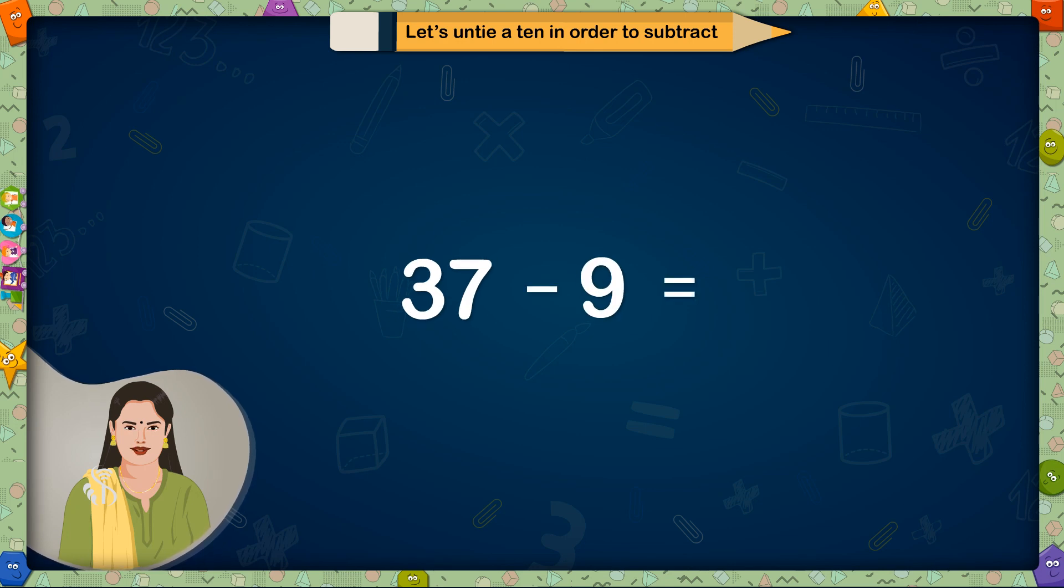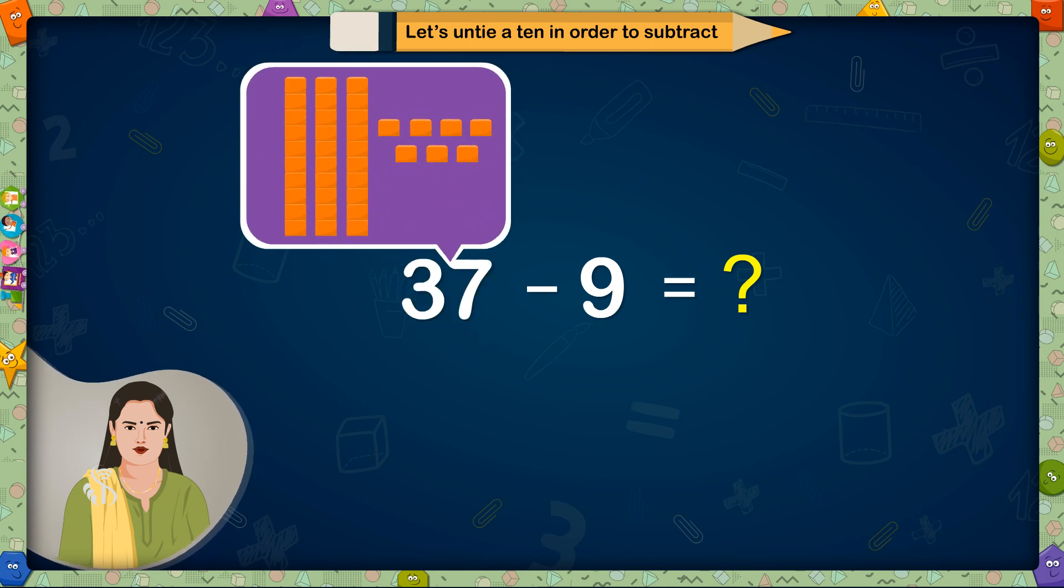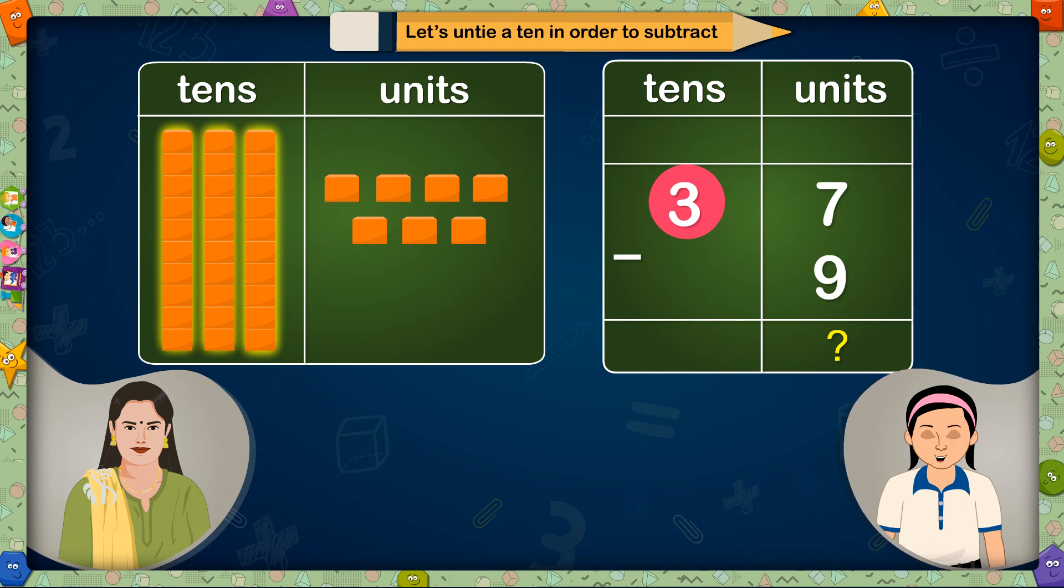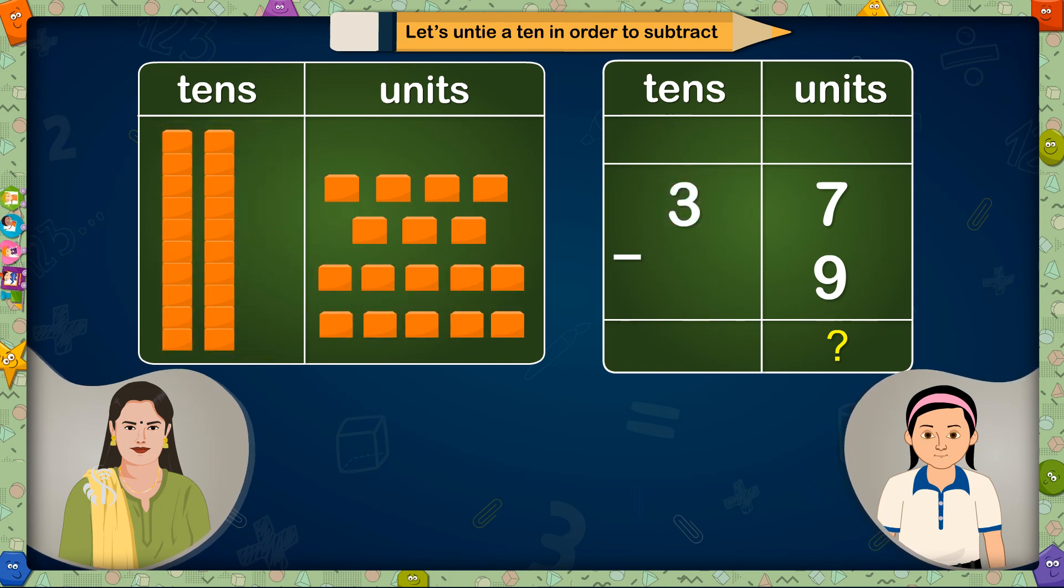Example 2. 37-9 is equal to? Here we have to subtract 9 from 37. There are 3 tens and 7 units in 37. We cannot reduce 9 units from 7 units. So what do we have to do? We will have to untie 1 ten from these 3 tens. Correct!